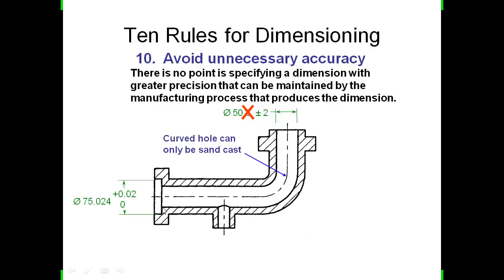Down the other end here, we've got a machined recess, possibly for a seal or something else to go in the end there and we've got a diameter of 75.024 plus 0.02 and minus nothing. Given that we have this tolerance of 0.02, we really can't justify the additional accuracy provided on the base dimension here. So we would drop off that third decimal place.